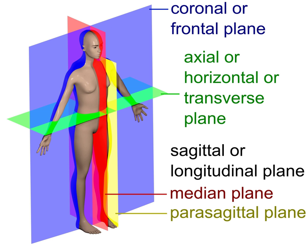The description of the coronal plane applies to most animals as well as humans, even though humans walk upright and the various planes are usually shown in the vertical orientation. The sternal plane is a coronal plane which transects the front of the sternum.